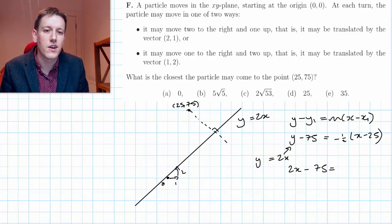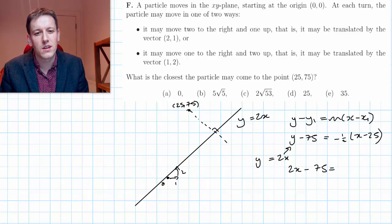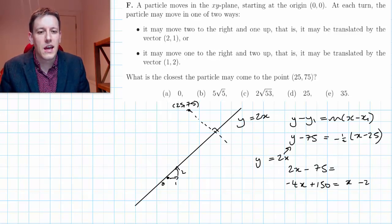I want to know where does that intersect the line y equals 2x. I can just substitute 2x here in place of y, so 2x minus 75. Actually, I'd rather multiply by minus 2 here. So let's say minus 4x plus 150 multiplying everything by minus 2.